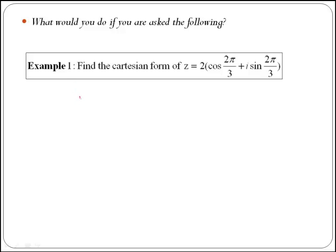Note that this time we are given the polar form, which is in general r times the quantity cos θ plus i sin θ, and we want to go to the Cartesian form, which is simply x plus yi.